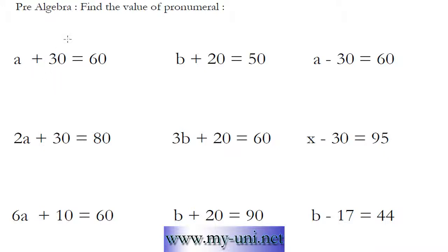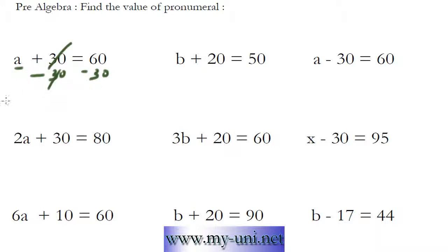To find the value of A, we can simply try to get rid of this number here. And to do that we can subtract 30 from this side of the equation. And when we do that, we have to subtract 30 from this side of the equation as well. So these two will cancel out. A will stand alone now. 60 minus 30 is equal to 30. So the value of A is equal to 30.